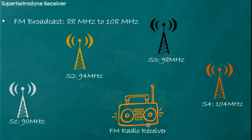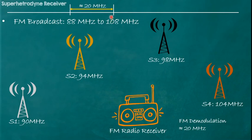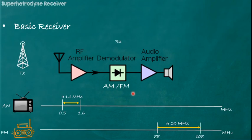If we think about the FM receiver, it has to demodulate all of these signals — at 90 MHz, 94 MHz, 98 MHz, and 104 MHz. So this receiver has to demodulate information over the entire range of frequency, which is a 20 MHz band. That means this receiver must be able to perform FM demodulation over this entire band of 20 MHz. So the AM receiver must demodulate over 1.1 MHz and the FM receiver over 20 MHz.